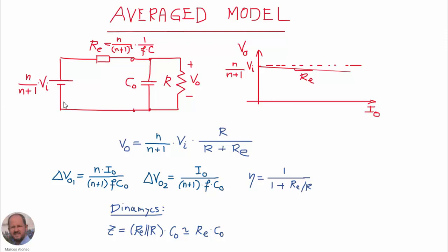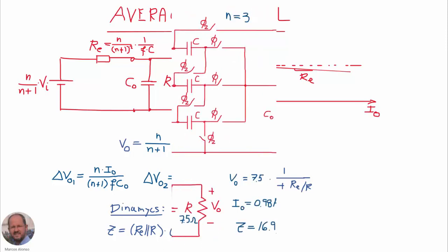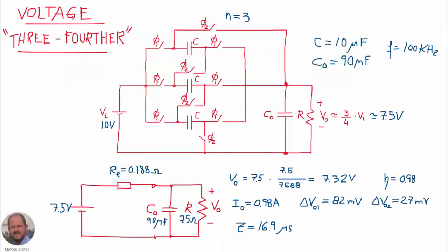As usual we summarize the average model of this converter: the ideal output voltage source, the series equivalent resistance, and the load. We have the characteristic output voltage as a function of input voltage and load, the output voltage ripple with two different peak-to-peak voltages, the efficiency, and the dynamics.